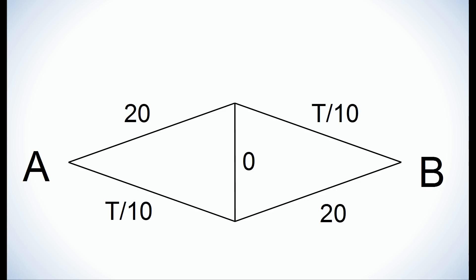The southern path takes T over 10 minutes, and the time depends on the traffic level T, which can be as little as 0 cars or as much as 200 cars. What is the right choice?